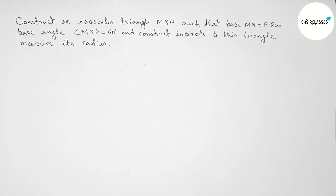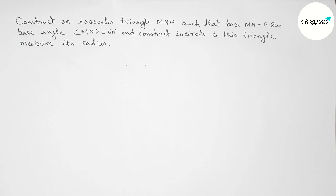Hi everyone, welcome to SI Share Classes. Today in this video we have to construct an isosceles triangle MNP such that the base is 5.8 centimeters and one base angle is 60 degrees, then construct the incircle to this triangle and measure its radius. Please watch the video till the end, so let's start.